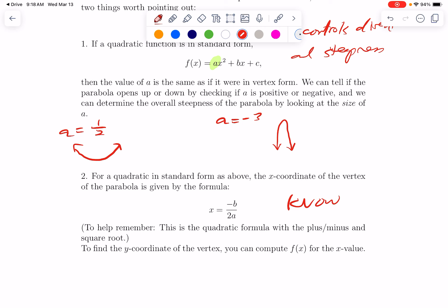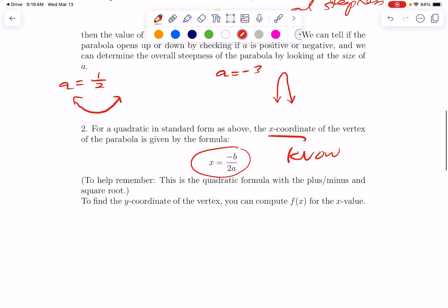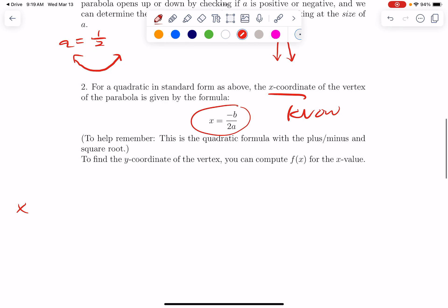If we have a quadratic in standard form as above, a is the coefficient for x squared, b is the coefficient for x. If we want to know where the vertex is, its x coordinate is given by the shortcut formula x equals negative b over 2a. If you remember the quadratic formula, this is the quadratic formula with the most complicated part removed.